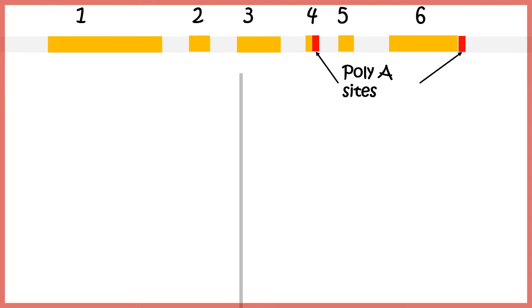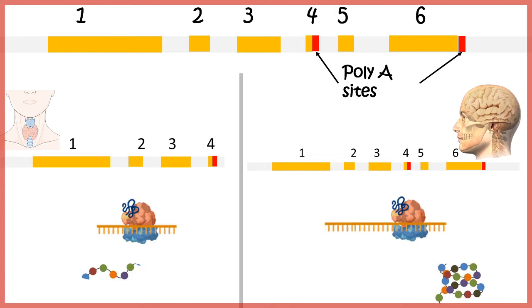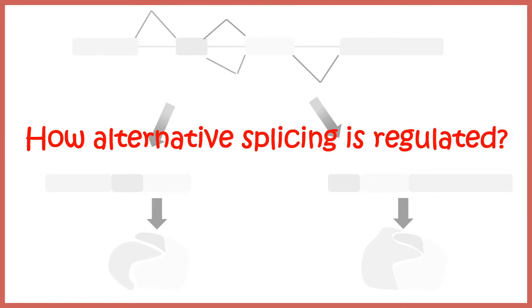Similar to alternative splicing, there is another mechanism called polyadenylation site choice. Different polyadenylation sites can be selected in a combinatorial, tissue-specific fashion, leading to totally different products. For example, in the thyroid gland the first poly-A site is selected producing calcitonin, whereas in the brain the second polyadenylation site is selected producing CGRP.